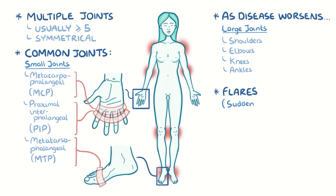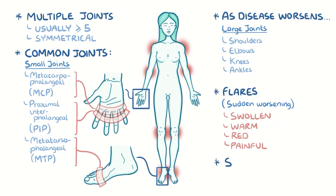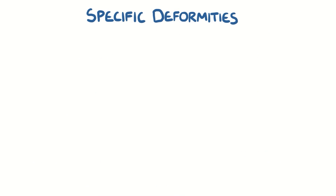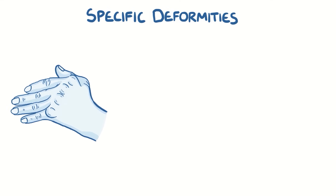During flares, or a sudden worsening of the disease, the affected joints get extremely swollen, warm, red, and painful. Over time, they become stiff, especially in the morning or after being inactive for a prolonged period of time. People with rheumatoid arthritis may develop specific deformities, usually of the metacarpal phalangeal joints of the hand, such as ulnar deviation of the fingers.